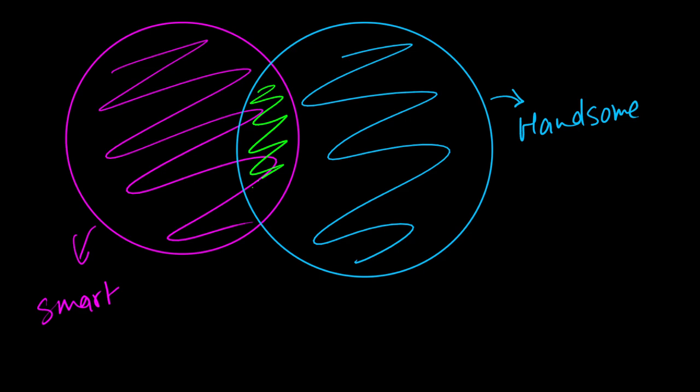And then what would this part tell you? This part will tell you that people are both smart and handsome, like me. All right, so these are some of the ways you can use Venn diagrams to represent some things.